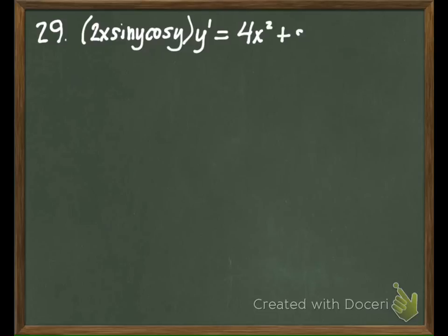So number 29, here is the equation they give us. They give us 2x sine y cosine y, and that's y prime, is equal to 4x squared plus sine squared y.